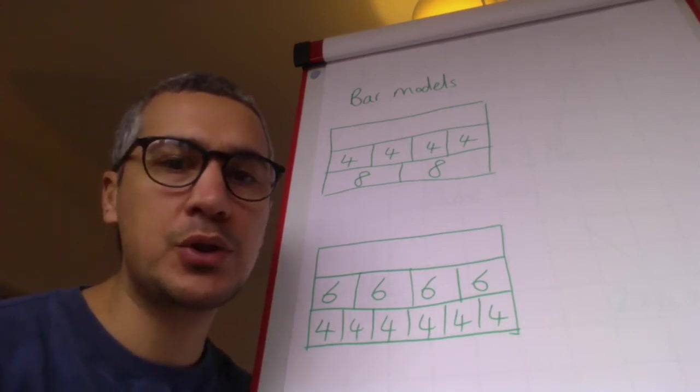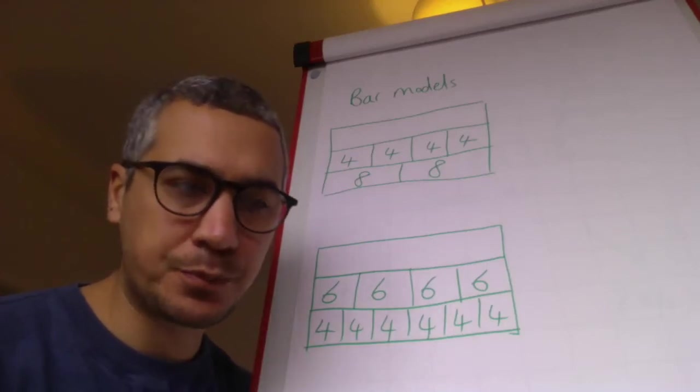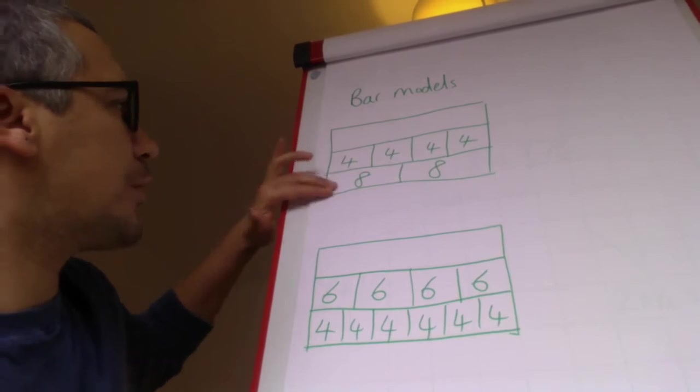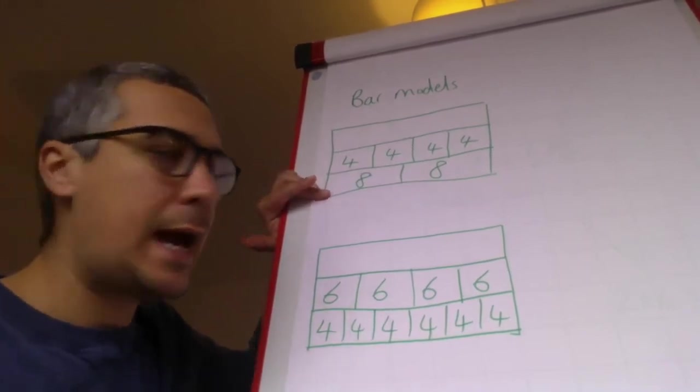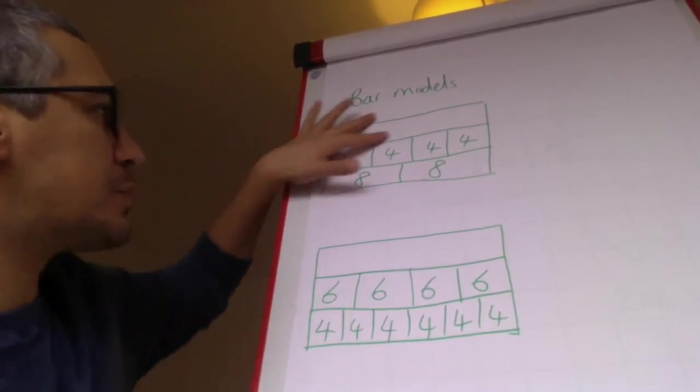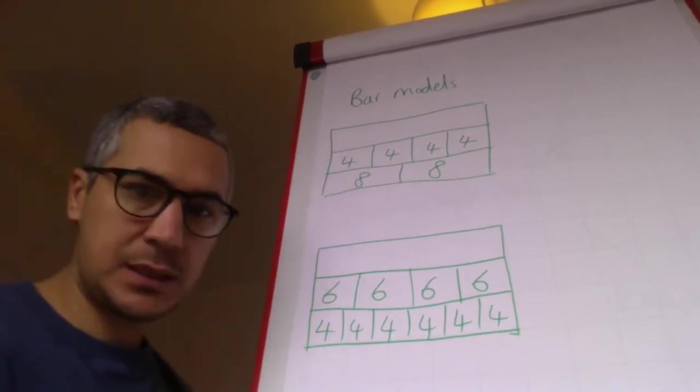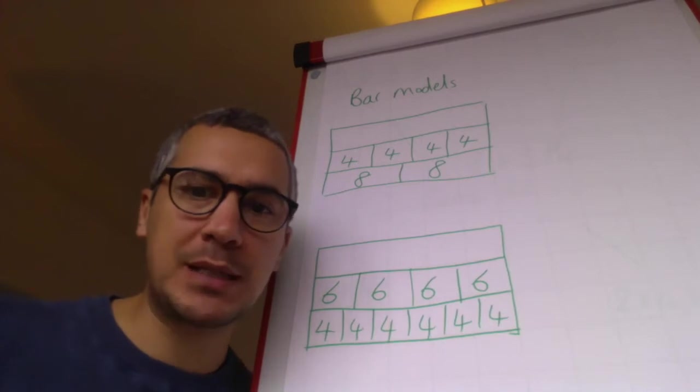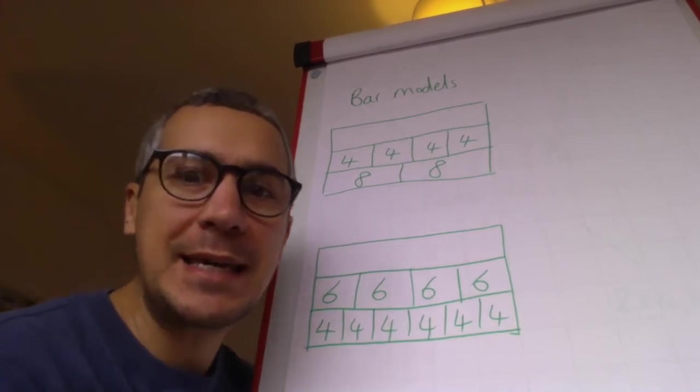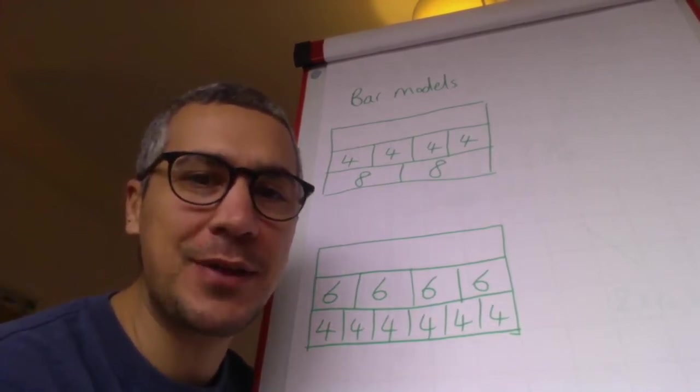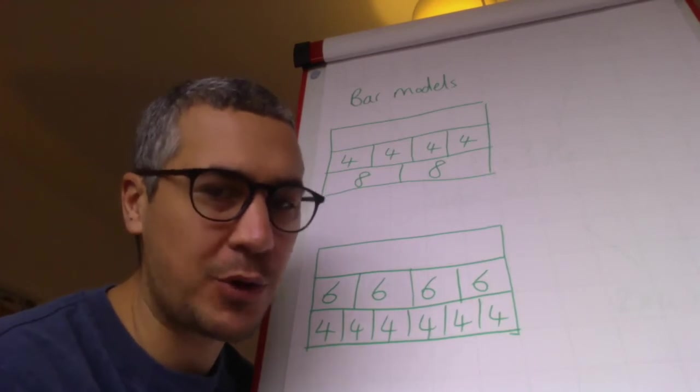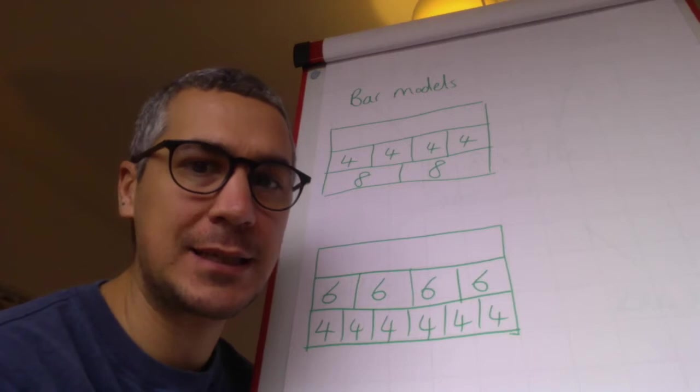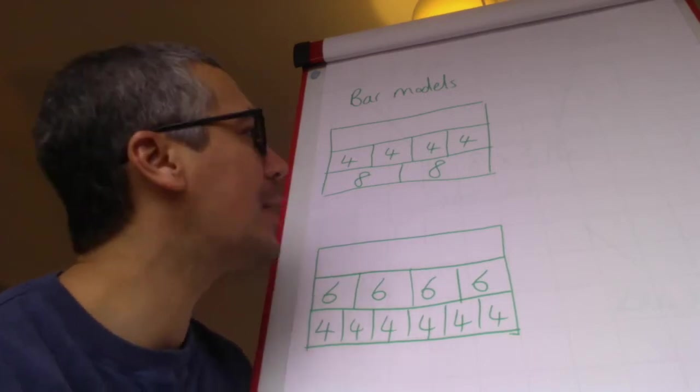Your questions on mild should start with some bar models that have got one, two, three bars along showing multiplication. This first one I've done especially for Leo in my class, who picked up the mistake in one of my last videos. Thank you, you're absolutely right—four lots of four is sixteen and not twelve like I said.